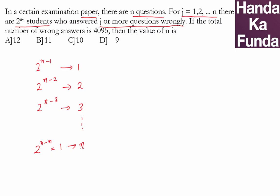So what is the total number of wrong answers? If we start from here, it will be 1 plus 2 plus 2 square, and this goes on till 2 to the power of n minus 1. And how much is this? Well, you can see the pattern.